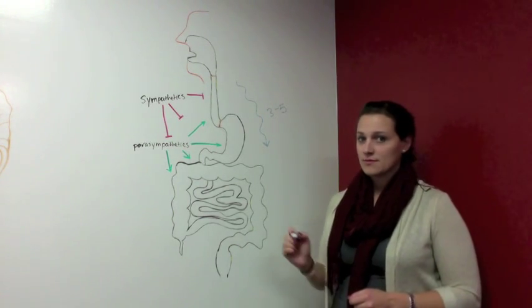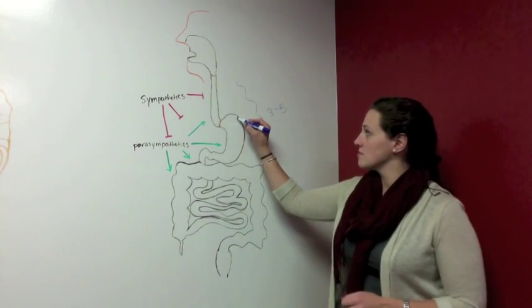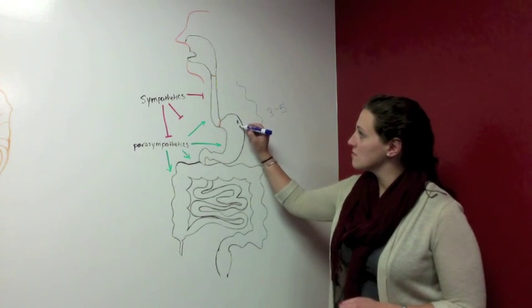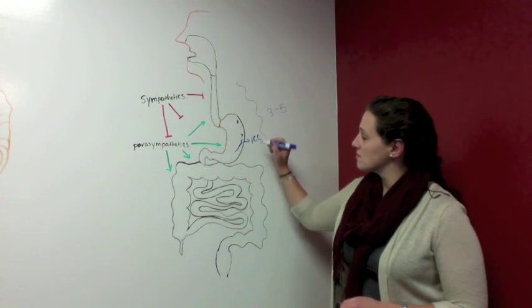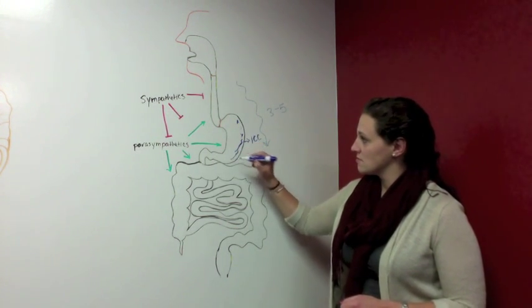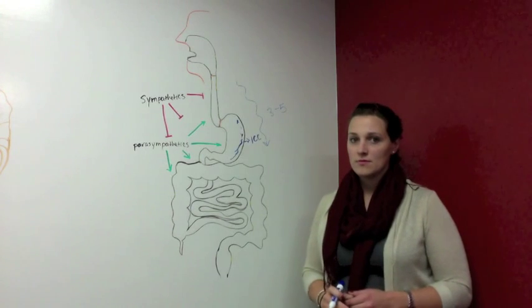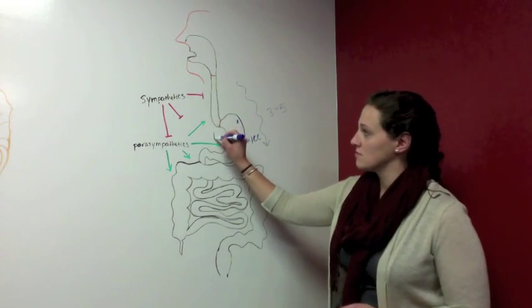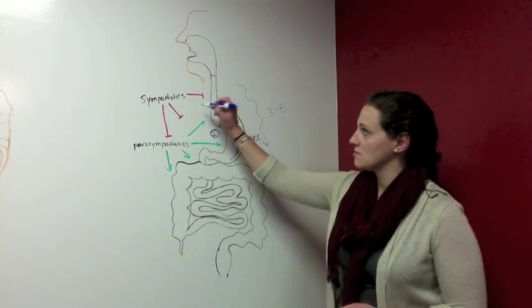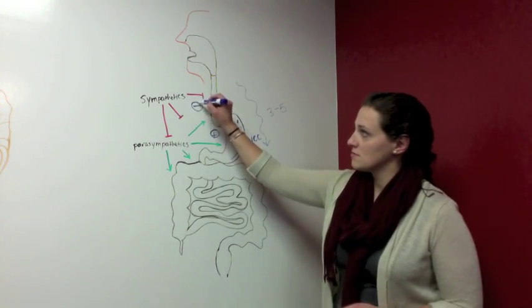These slow waves are generated by the pacemaker cells of the stomach, the interstitial cells of Cajal. The ICC generate rhythmic depolarizations and mediate neurohumoral input from enteric motor neurons. Parasympathetic stimulation increases stomach contractions, whereas sympathetic stimulation decreases stomach contractions.